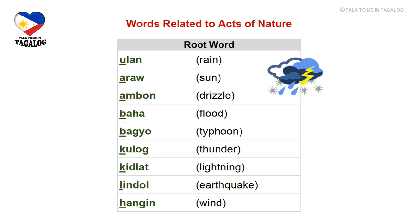Our nine root words are: ulan (rain), araw (sun), ambon (drizzle), baha (flood), bagyo (typhoon), kulog (thunder), kidlat (lightning), lindol (earthquake), and hangin (wind).